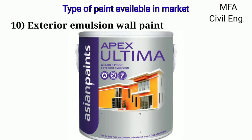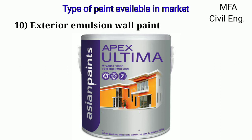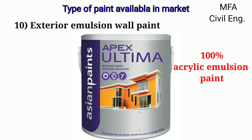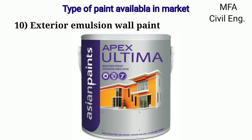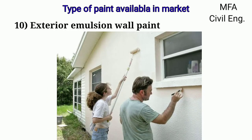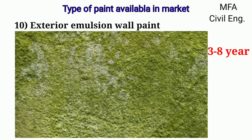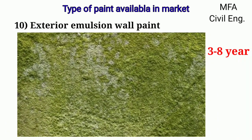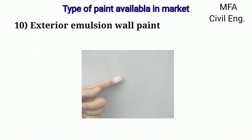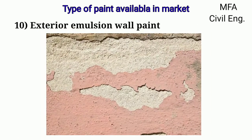Exterior emulsion wall paint is a water-based paint that is 100% acrylic emulsion paint. It is formulated for exterior surfaces such as brickwork and plaster. It provides at least 3 to 8 years of protection against algae and fungi growth. It is highly resistant to alkali, chalking, and peeling.